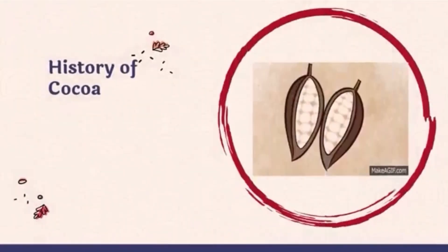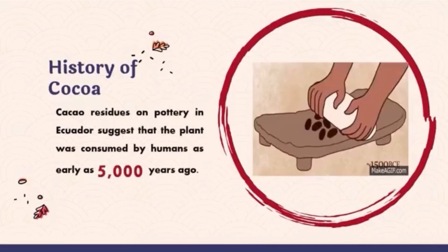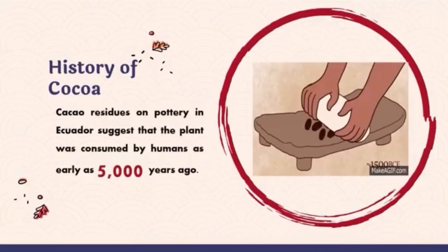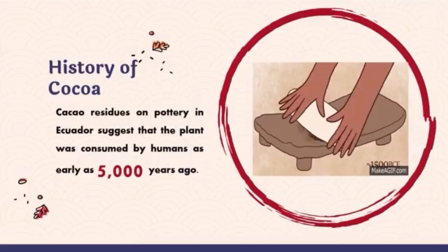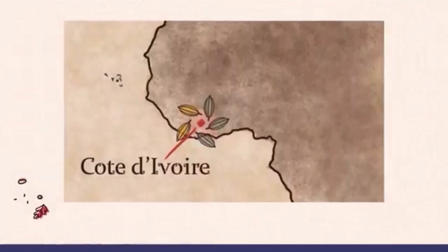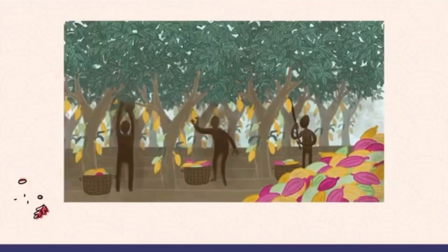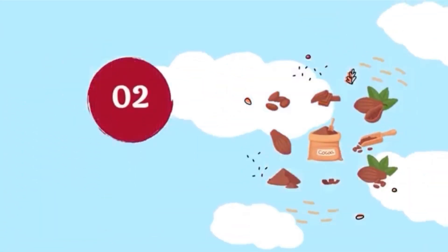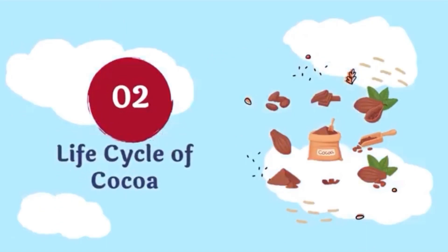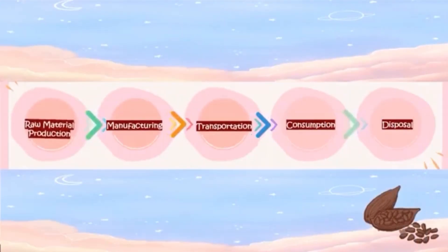Now let's look into the history of cocoa. Cacao residues on pottery in Ecuador suggest that the plant was consumed by humans as early as 5,000 years ago. The tree was likely domesticated in the upper Amazon region and then spread northward. Next, we will look into the life cycle of cocoa — there are five processes: raw material, manufacturing, transportation, consumption, and lastly disposal.